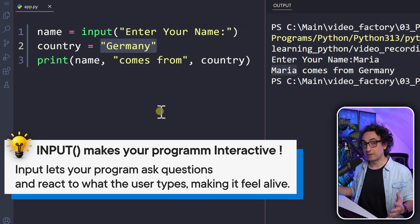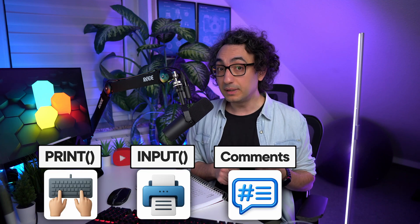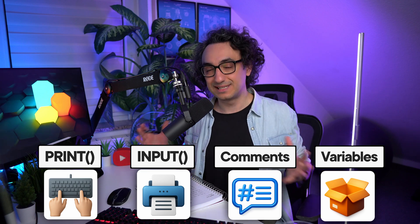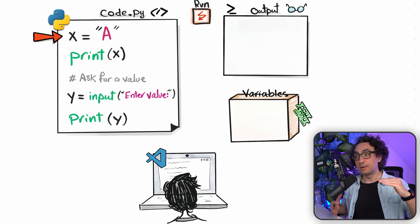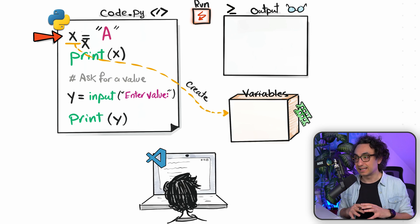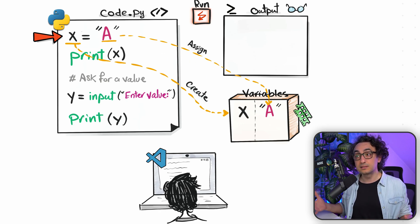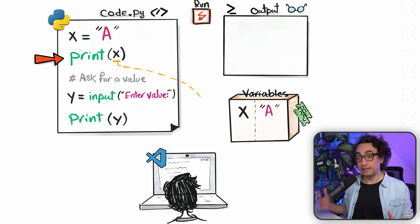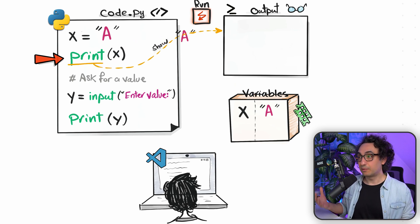Using input and variables, our code feels smart, dynamic, and interactive — an interaction between our code and the user. We ask for a value and do something with it. So far we've learned two built-in functions: input and print, and also about comments and variables. Now let's see how everything works together behind the scenes. When Python executes line by line, the first line creates a variable 'x' in memory and assigns it the value 'a'.